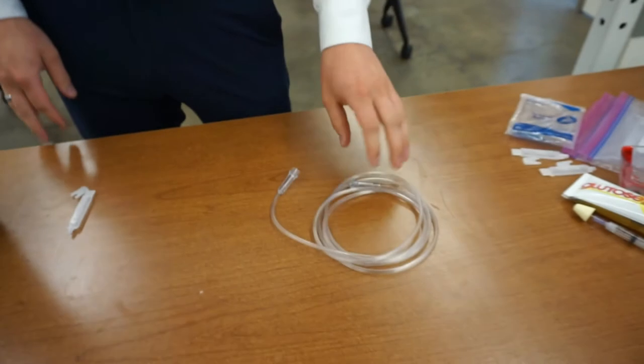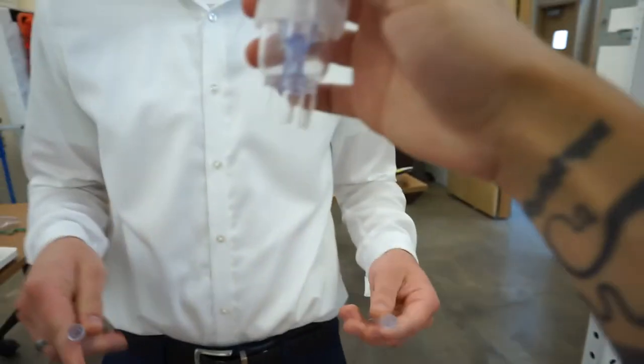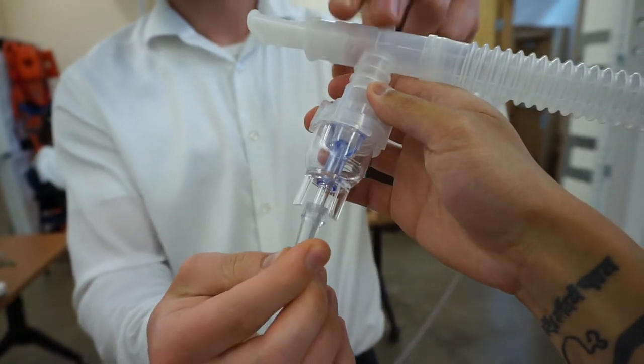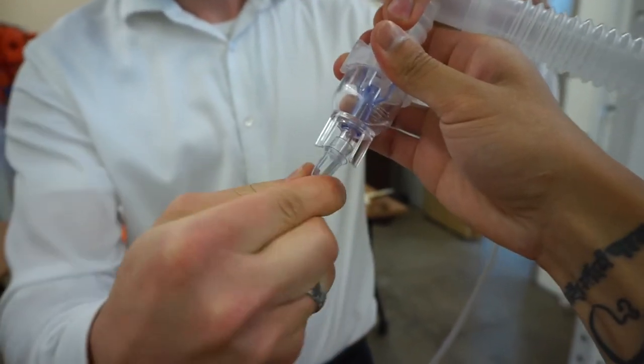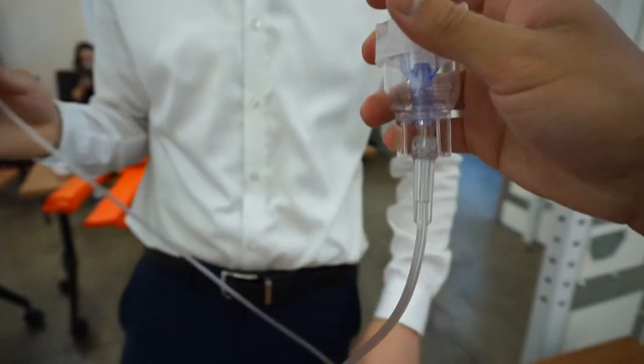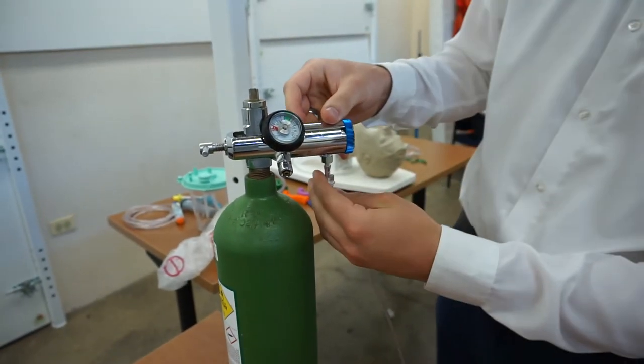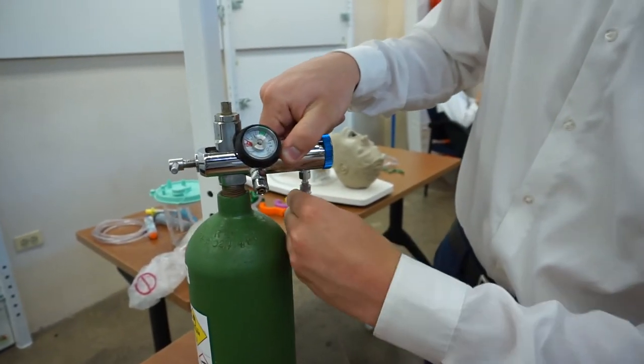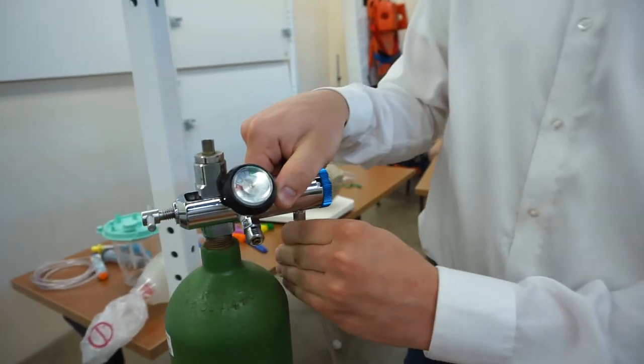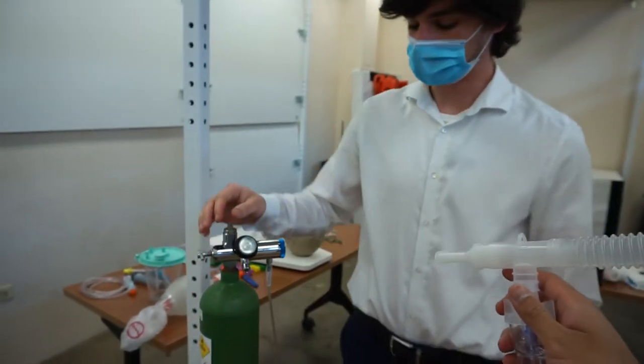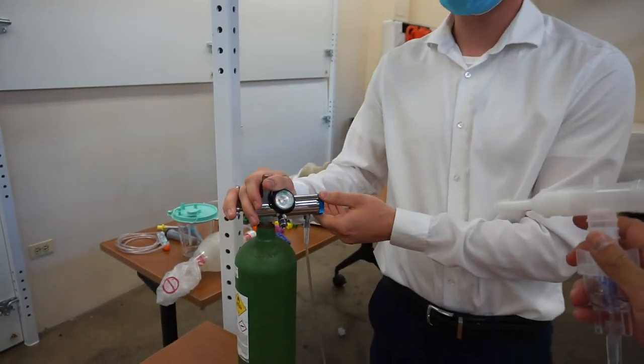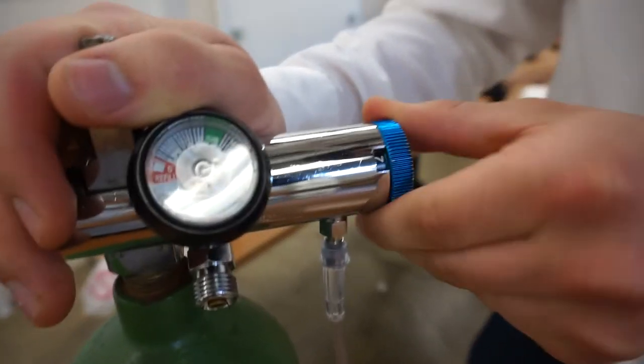Grab that last piece, the tubing. Both sides are the same, so apply the tubing under the chamber and make sure it's snug. Then apply the other end to the regulator. The tank is cracked. What flow rate are we going to be using? We're going to move to six liters per minute. Go ahead and crack it to six liters per minute.